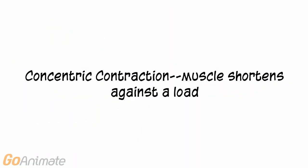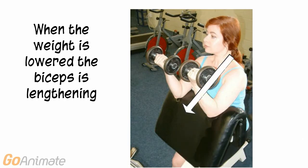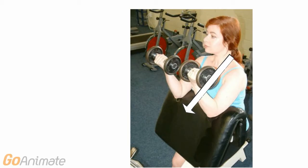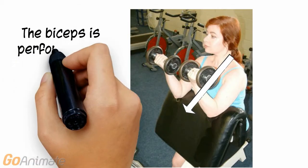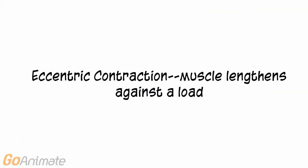In concentric contractions, the muscle shortens against a load. During the second phase of the exercise, the weight is lowered. The biceps is now lengthening against a load. We say the biceps is producing an eccentric contraction. In an eccentric contraction, a muscle lengthens against a load.